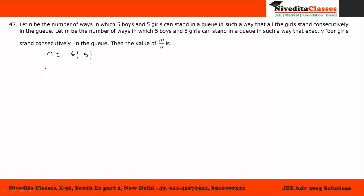Similarly, m is the number of ways in which 5 boys and 5 girls stand in a queue such that exactly 4 girls stand consecutively. We choose 4 girls from 5 in 5C4 ways; for the seating group it will be 6C2, the group arrangement is 2!, girls arrangement is 4!, and boys arrangement is 5!. So m = 5C4 × 6C2 × 2! × 4! × 5!.